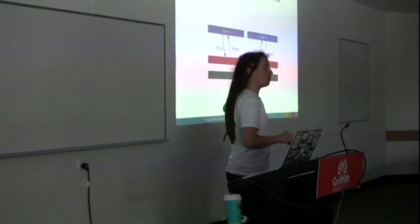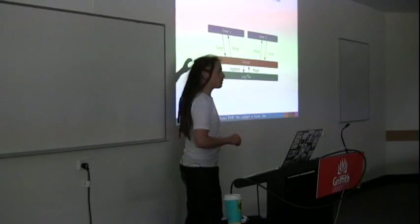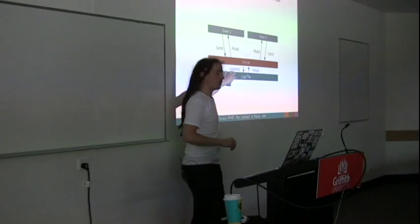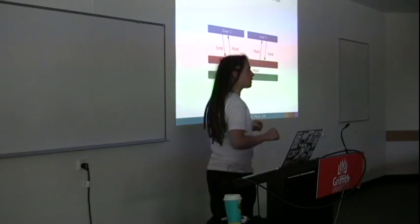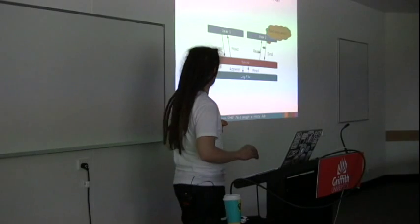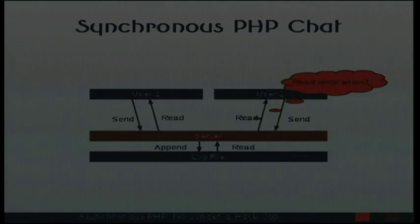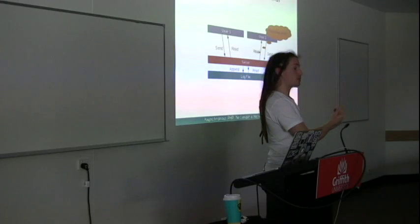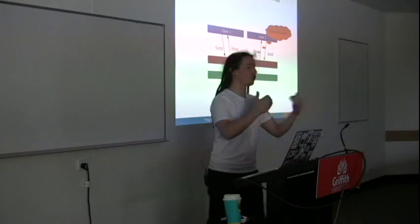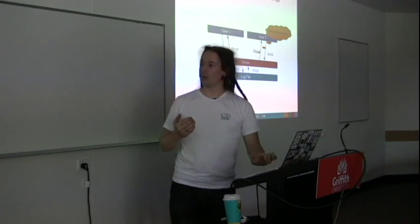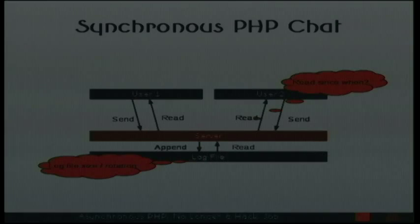You've got this send and receive thing going on, and the server is the central point of all the data. It stores all the information in a log file, reads and writes. Then you've got to think about things like when user 2 says I'd like to know what other messages have come through - when is that from? So you've got timestamps, or maybe similar to a commit hash, a way of signifying my last message was here, I want everything since then. You've got to handle that communication, and then the log file is going to grow out of control.